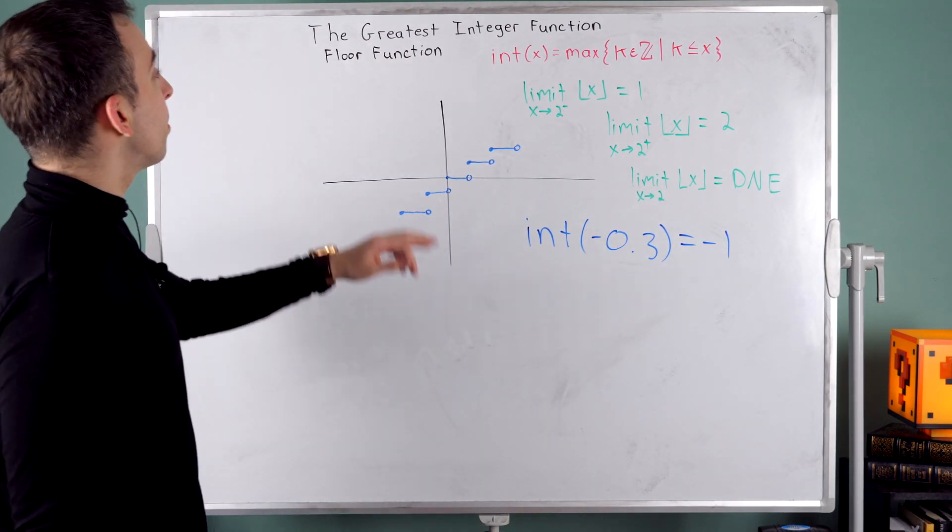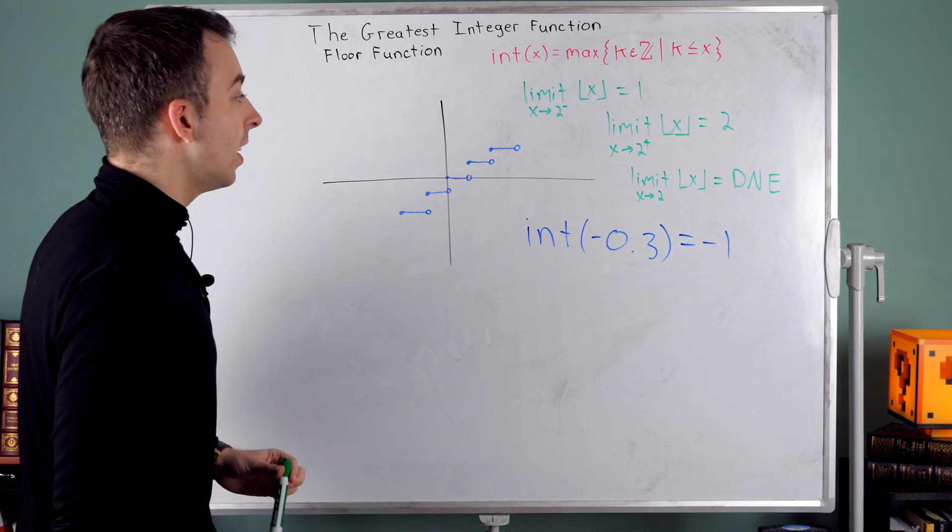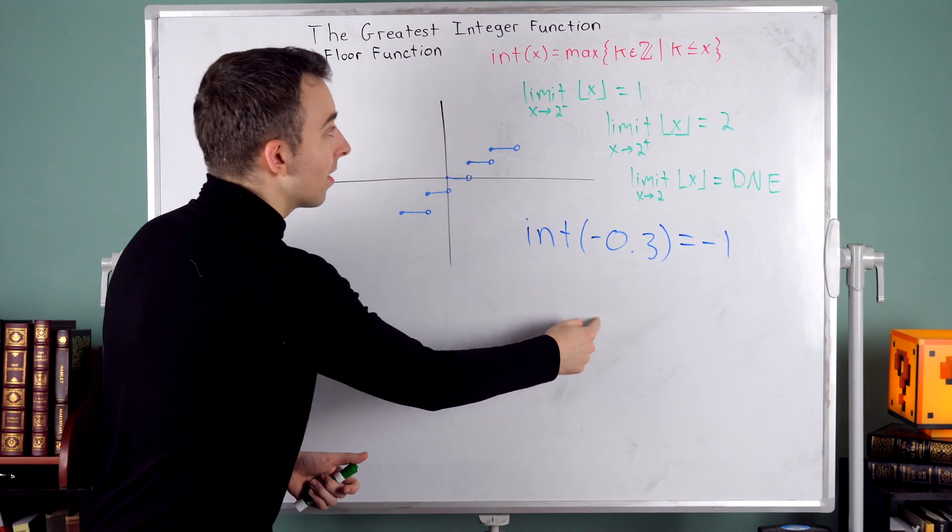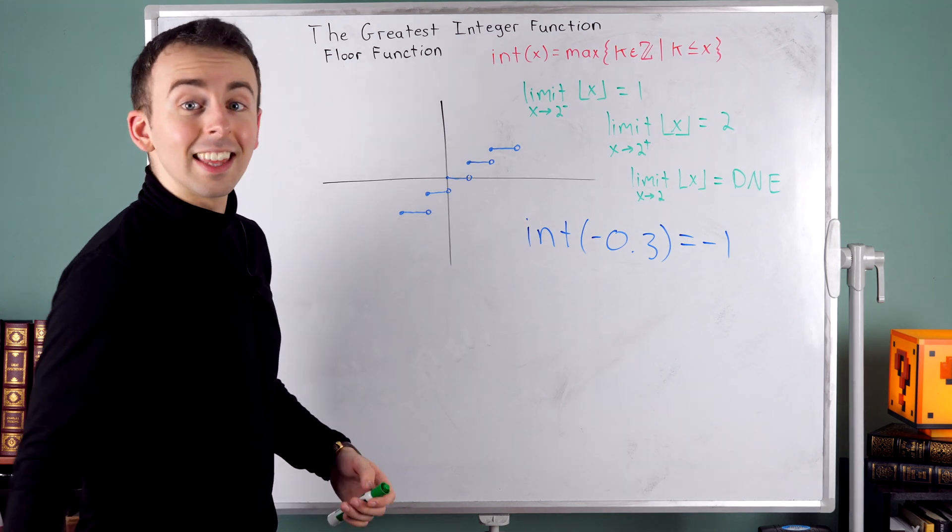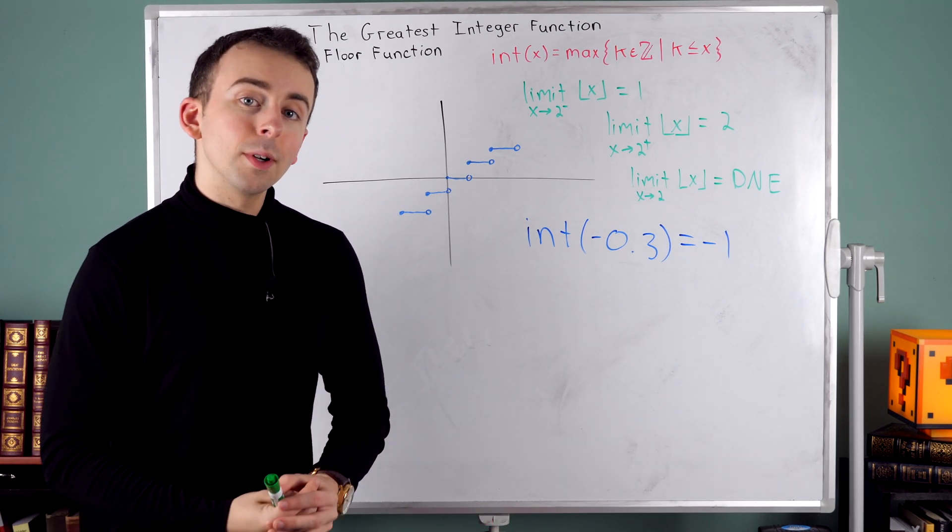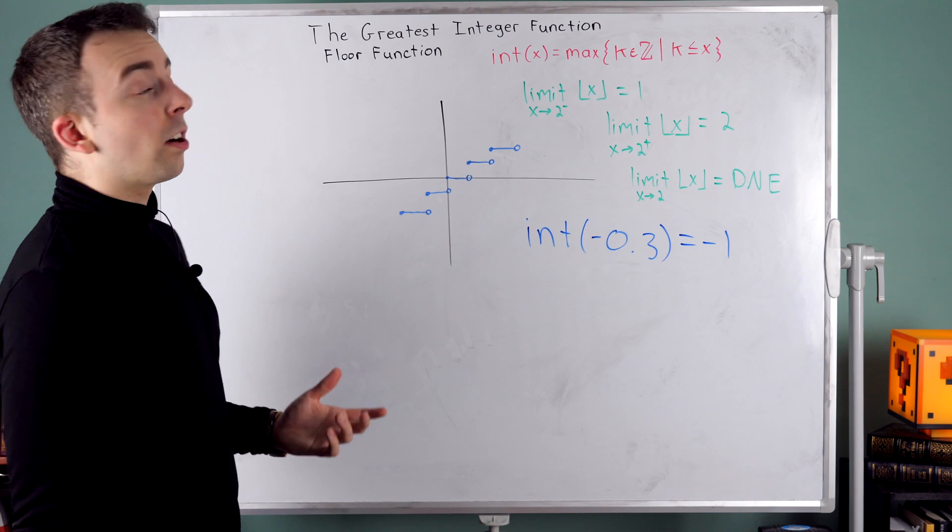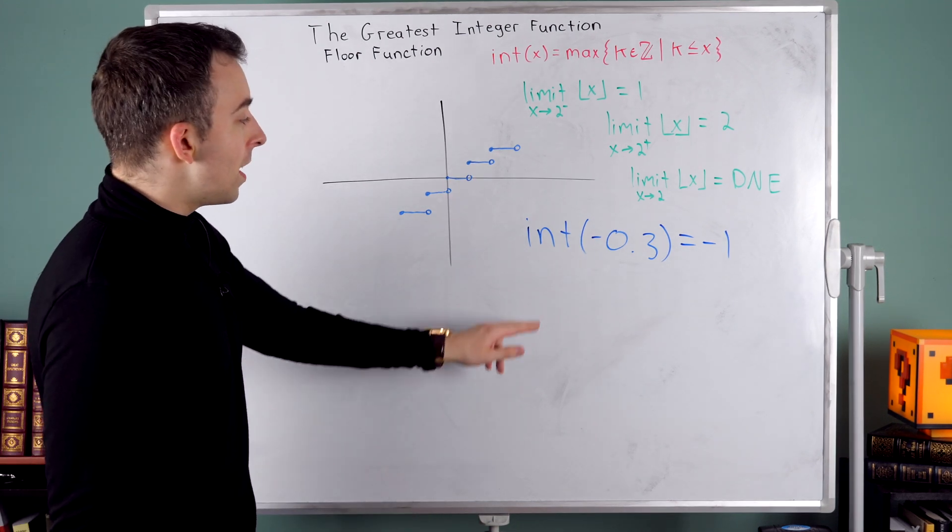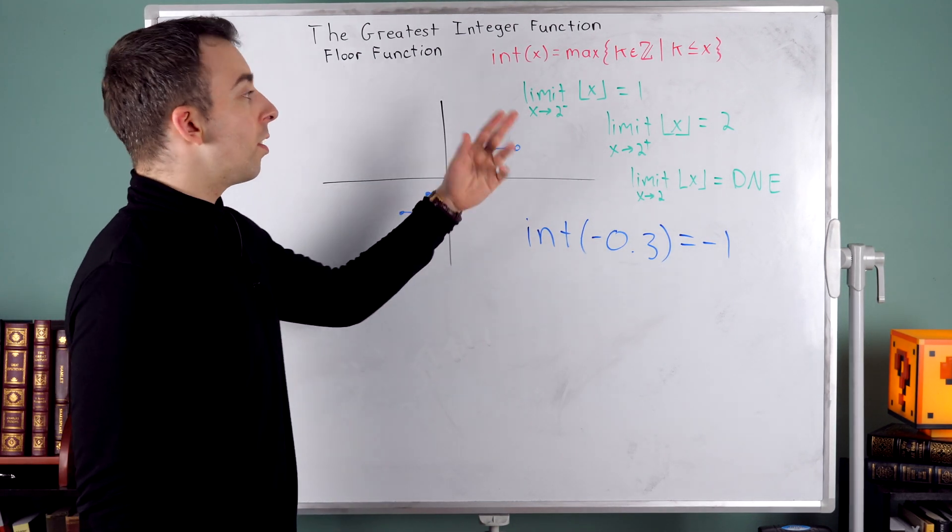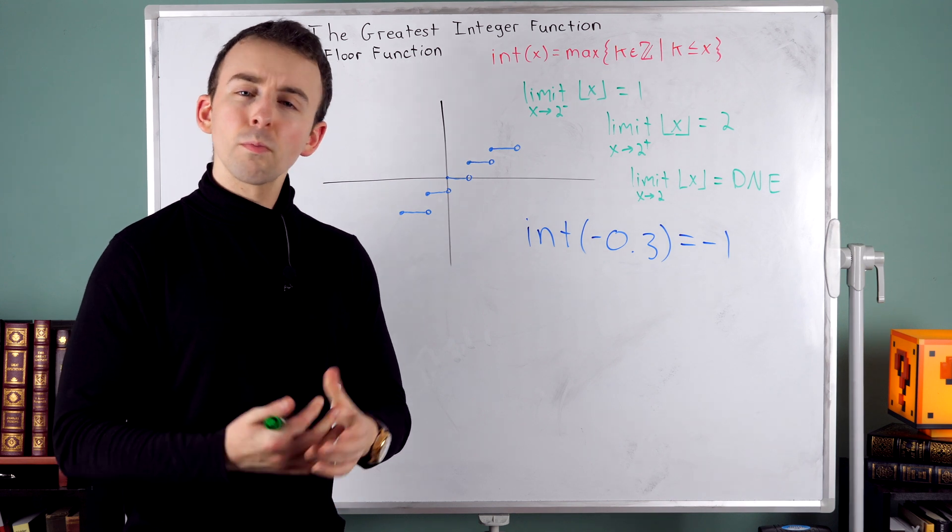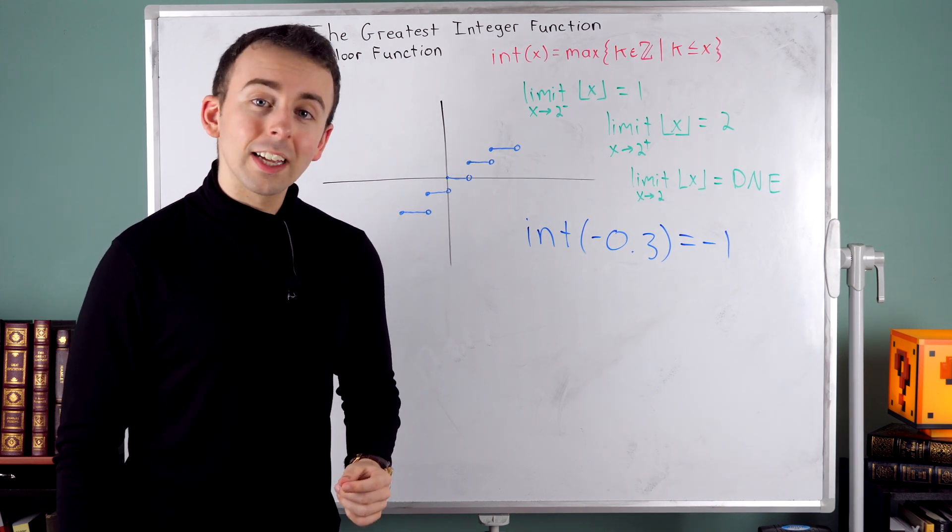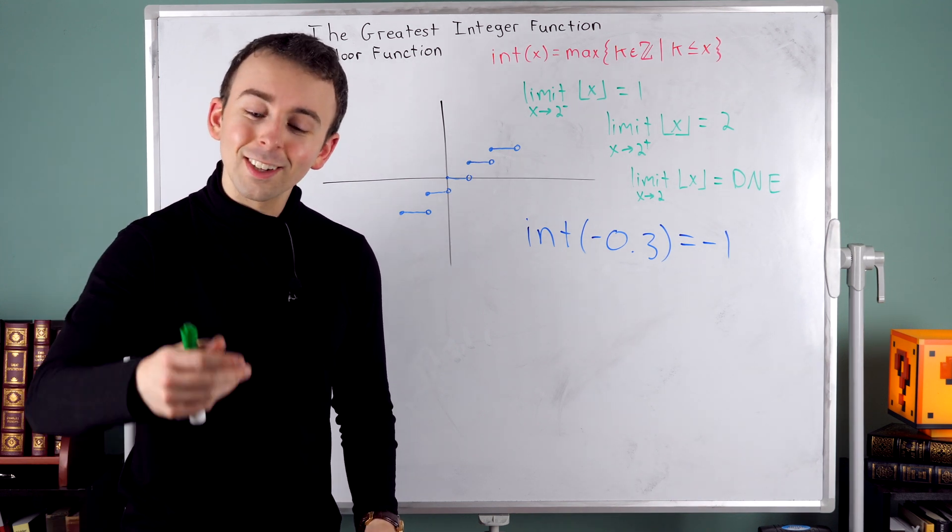Again, plain and simple, this greatest integer function, which is sometimes written like this and sometimes written like this, just rounds the input down to the nearest integer. It's sometimes called the floor function, and you should be able to recognize and use both of these notations. Pretty cool function. Let me know if you have any comments, any questions down in the comments.